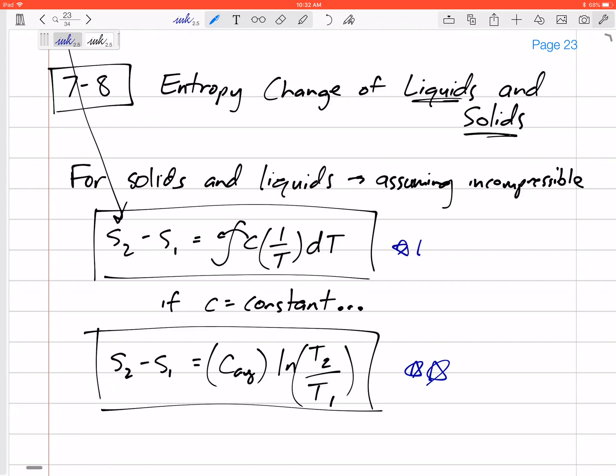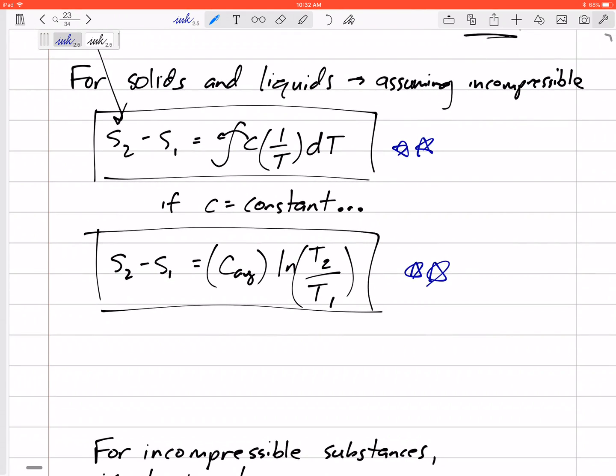And what's the integral of 1 over T DT? It is LN of T2 over T1. So now we have an equation for the change in entropy using specific heats and using the temperatures. This is for solids and liquids. So either this is more accurate, but if we have an equation for C, we can use that under the integral. Or we can just assume that C stays the same or take the average.